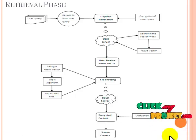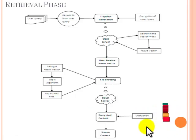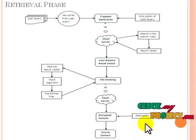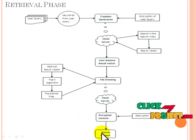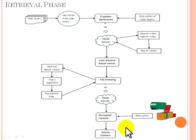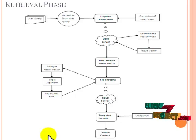The trapdoor is sent to the cloud server. The cloud server receives the trapdoor and prepares a result vector based on it, searching the search index to retrieve files related to the trapdoor. This result vector is sent to the user, who decrypts it with their user keys and then applies the top-K algorithm to retrieve the top-ranked files.